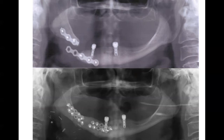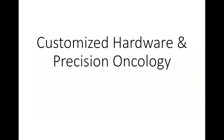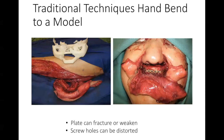Let's talk about customized hardware and precision oncology, which really wasn't present prior to the advent of 3D printing and CAD-CAM technology. Traditional techniques involve hand-bending a titanium plate to a model — I would take a titanium mini plate, pre-bend it to an acrylic model printed ahead of time, sterilize the plate outside the operating room a few days before, and bring it to the OR. The problem with hand-bending is that the plate can fracture or weaken from over-manipulation.